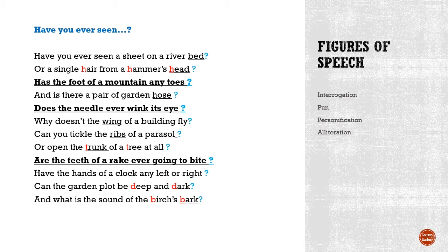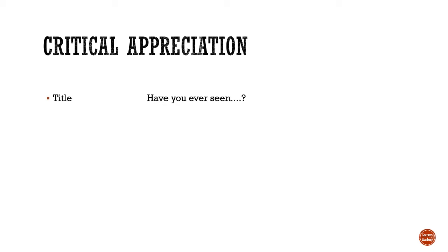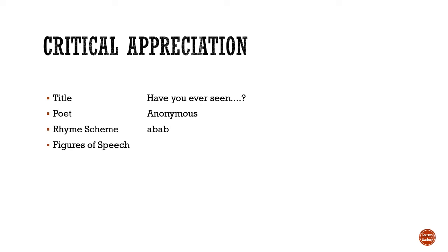The next topic is critical appreciation, in which we address five topics. The first is the title — 'Have You Ever Seen' — addressed to the reader in a rhetorical question manner. The second is the poet, who is not known, but we can assume after reading the poem that he or she is well versed in English language, having used lots of homograms. The rhyme scheme of the poem is ABAB. The poet has used basically four figures of speech in the entire poem.